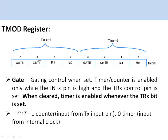The GATE bit in TMOD: when cleared, the timer is enabled using the TR0 or TR1 bit. When the GATE control bit is set to 1, the timer or counter is enabled only while the interrupt pin is high — so in addition to the TR1 control bit, the interrupt pin must also be high. The C/T̄ bit selects counter or timer mode: when 1, it acts as a counter counting external events; when 0, it gets the clock from the microcontroller crystal.